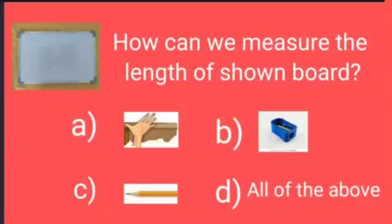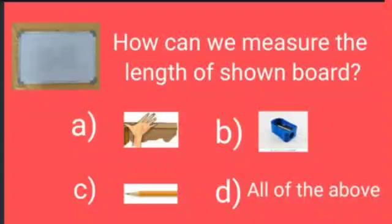Our today's question is: how can we measure the length of the shown board? We have 4 options. Option A is handspan, option B is sharpener, option C is pencil, and option D is all of the above. We can measure the length of a board with the help of handspan, sharpener, and pencil. So, our correct option is D, and we will put a tick on option D.